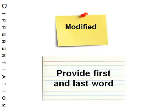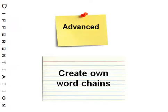This activity may be differentiated by providing a student or students with the first word, honey, and the last word, pole. Additional words could be added to the middle as well. More advanced students could create their own word chains.